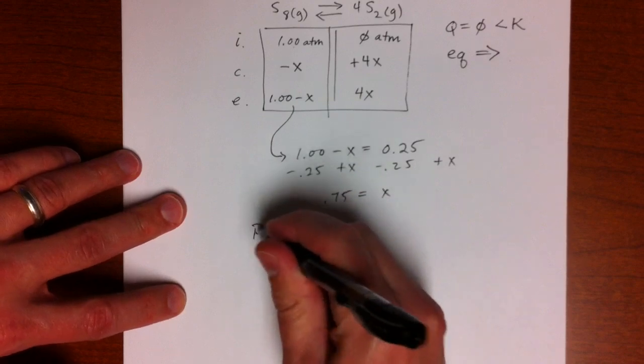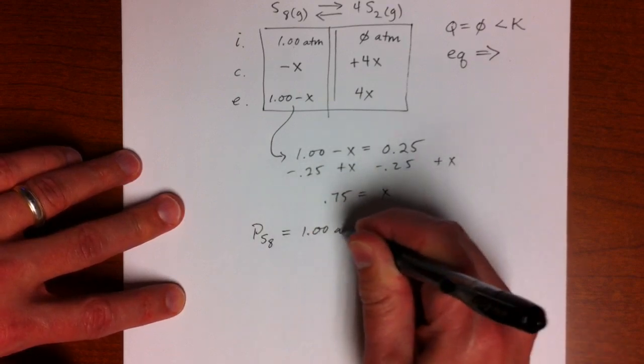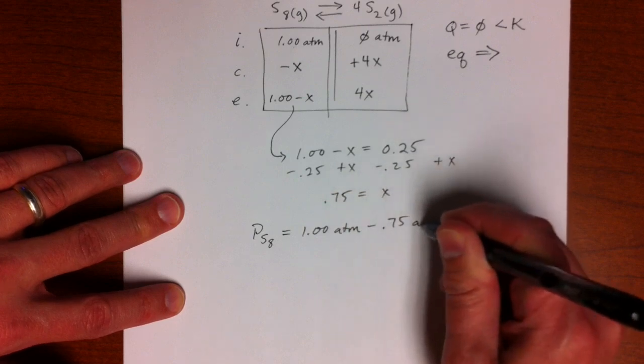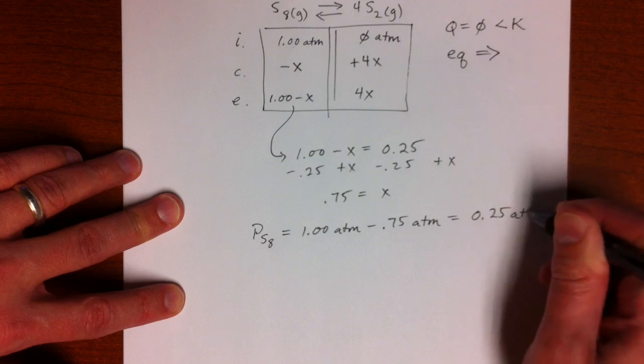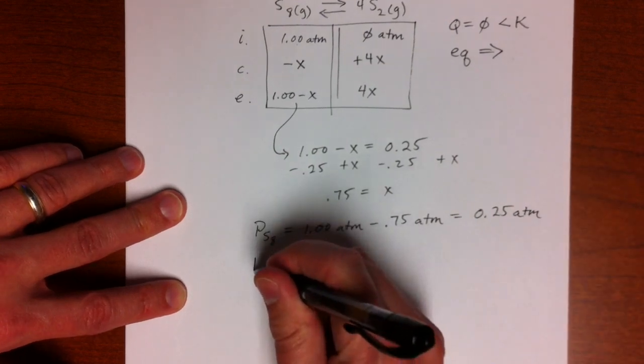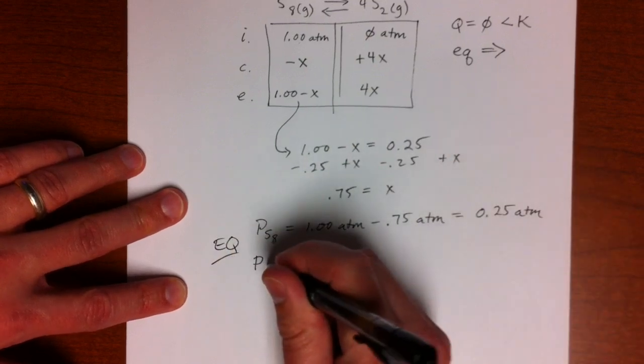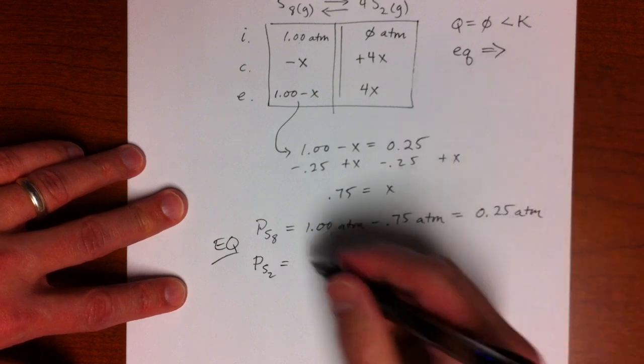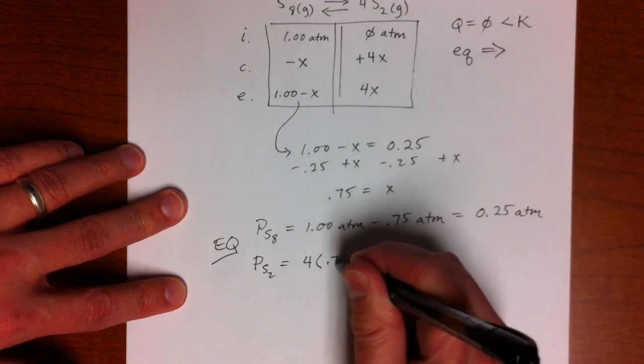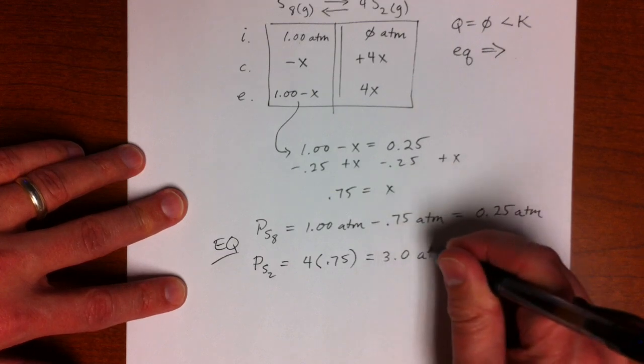So S8, partial pressure, would be 1.00 atmospheres minus X, 0.75, which would give us 0.25 atmospheres. These are equilibrium pressures. The pressure of S2 would be 4X. So that would be 4 times 0.75. I think that is 3.0 atmospheres.